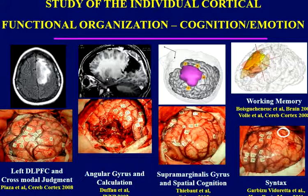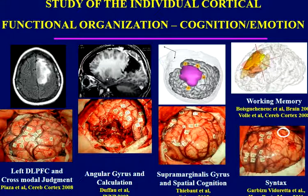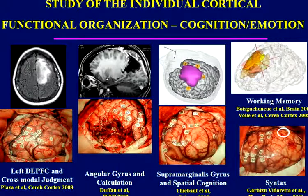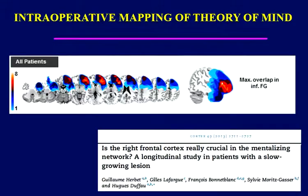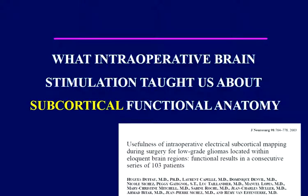During surgery we can adapt tasks according to the patient's quality of life. If you are a lawyer, we ask them to perform judgment tasks; if a mathematician, to map calculation; if a dancer, to map spatial cognition in the right non-dominant hemisphere; if a writer, to map syntactic processing. In all cases, we now map behavioral networks involved in theory of mind. This is true for the cortex, and also for white matter tracts — and today the only methodology giving real insight into white matter tract function is direct stimulation.